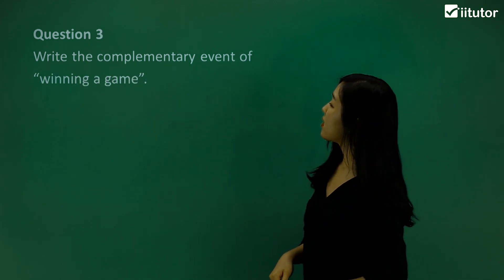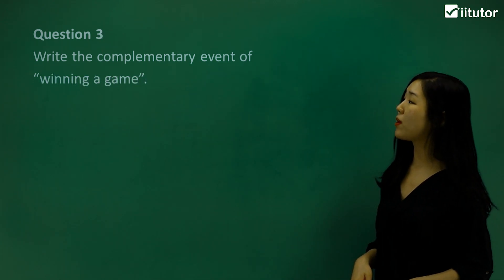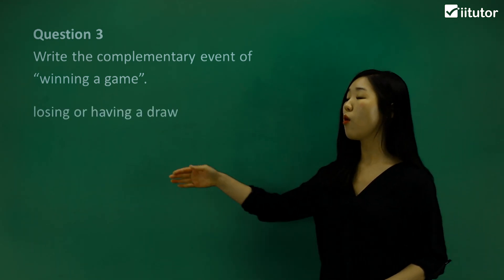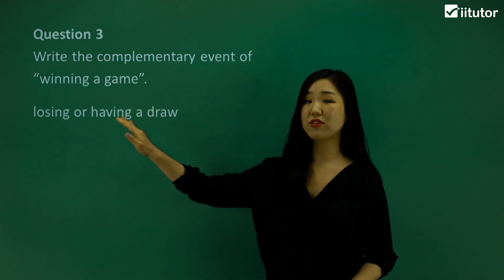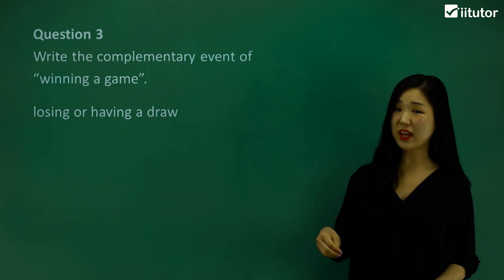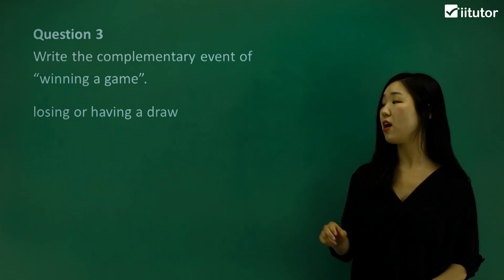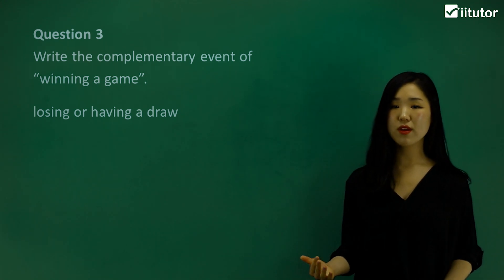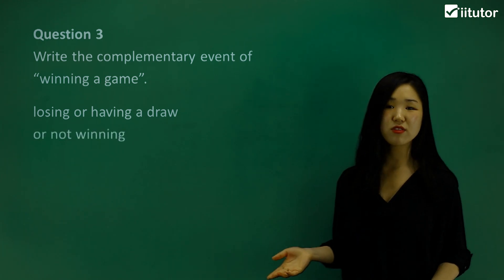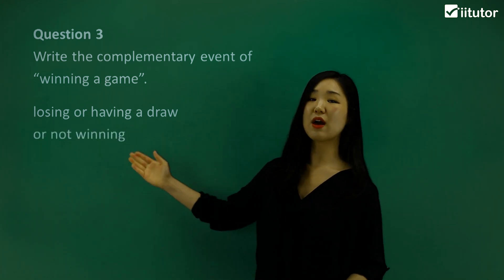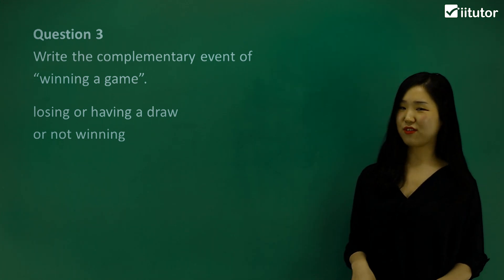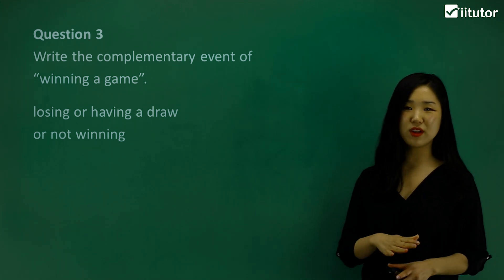Question three: write the complementary event of winning a game. If we're not winning, it must be losing or also having a draw. So you must include both. Losing or having a draw would also not be included in winning, so that's also part of the complement. You can say 'losing or having a draw'. Or if you simply say 'not winning', that would just be the complement of winning. Use the word 'not' if you're unsure or don't want to list out too many things.